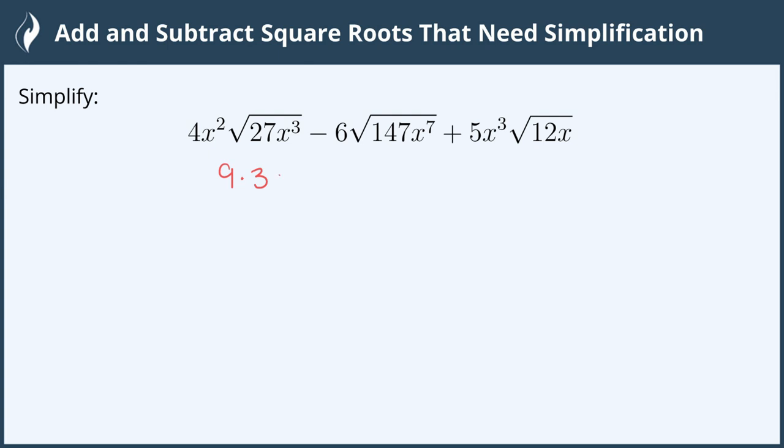x³ is not a perfect square but x² is, and to make it 3 we need to multiply it by one more. So we have x² and one more x, so we've now replaced our x³ and we still have 4x² out front and each of these is also still under a radical.